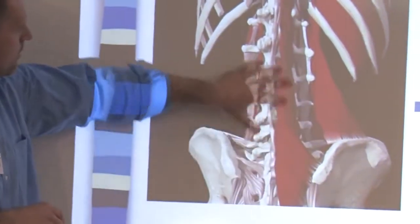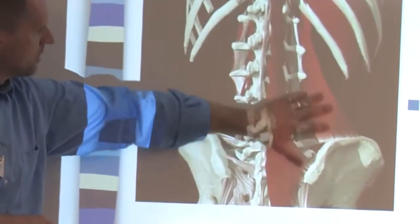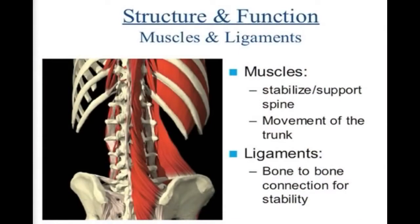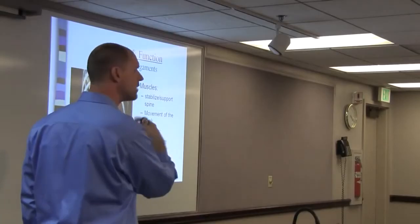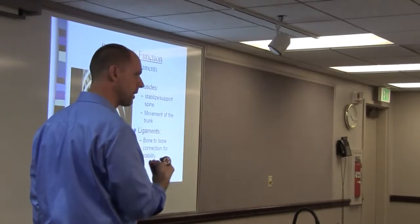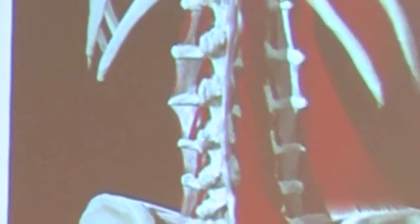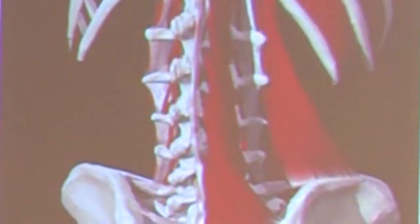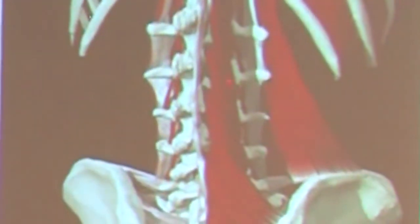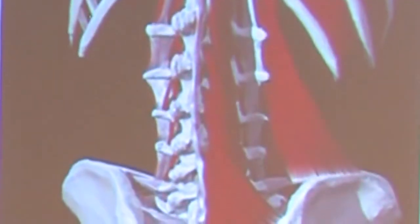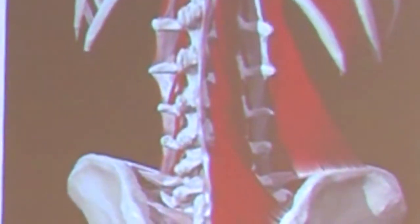Then we have the larger muscles here. Those smaller, deeper muscles we can consider stabilizers — they support the spine. Then we have those larger muscles that actually move the trunk.